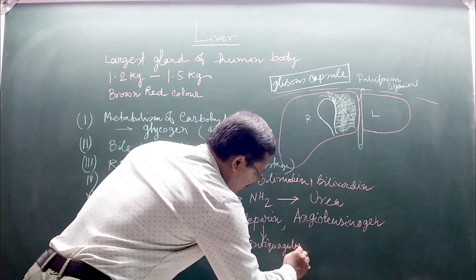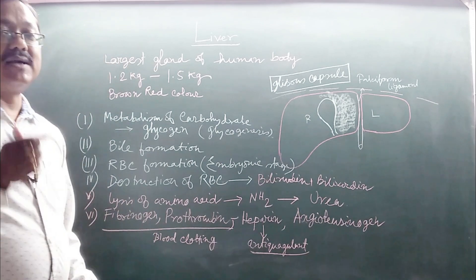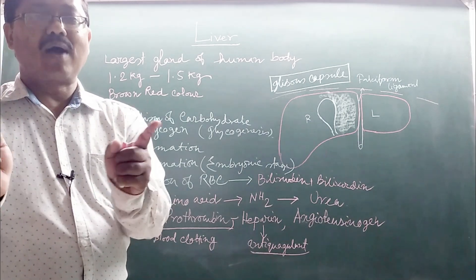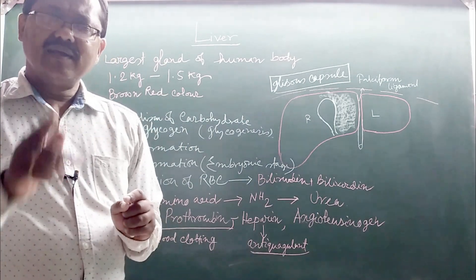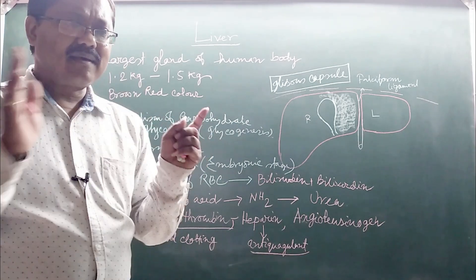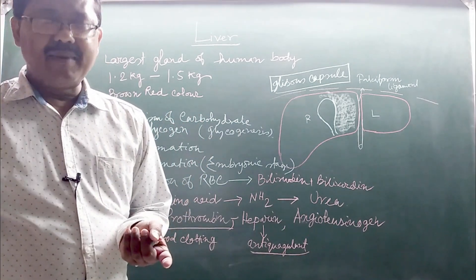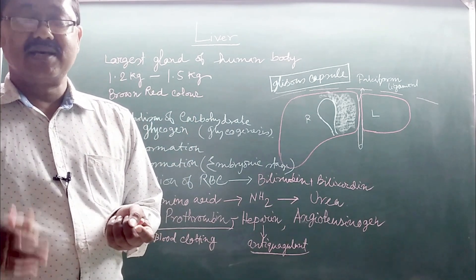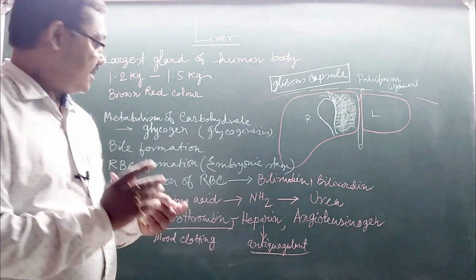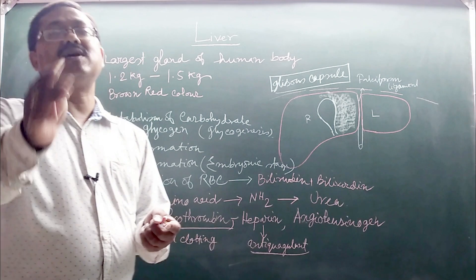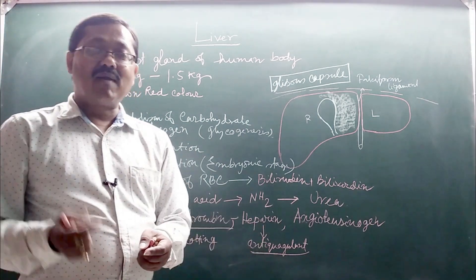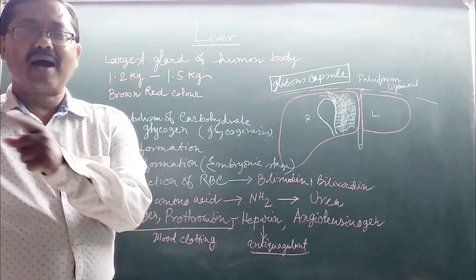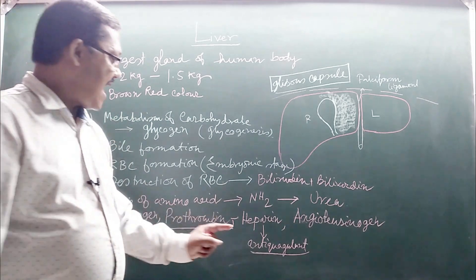An anti-coagulant is a substance that, when added to blood, prevents coagulation. For example, when a patient with renal failure undergoes hemodialysis, an anti-coagulant is injected into the blood before it enters the dialyzer so that the blood does not coagulate inside the machine.